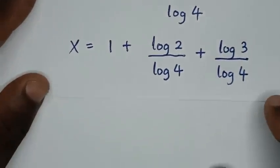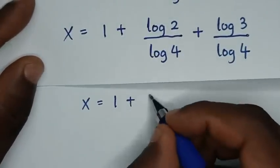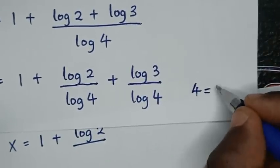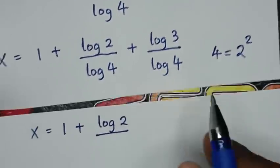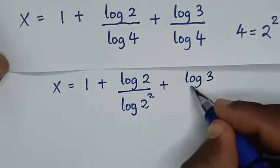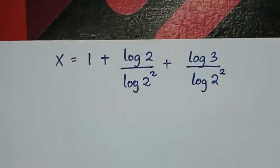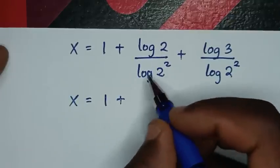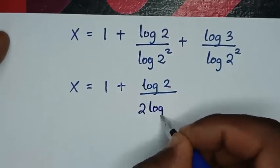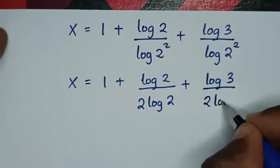In the next step, x is equal to 1 plus log of 2 over log of 4, plus log of 3 over log of 4. Since 4 is equal to 2 squared, log of 4 becomes log of 2 squared. Applying the power rule, the square moves to the front, so log of 2 squared becomes 2 log of 2. This applies to both denominators: x is equal to 1 plus log of 2 over 2 log of 2, plus log of 3 over 2 log of 2.